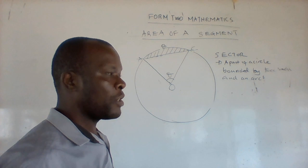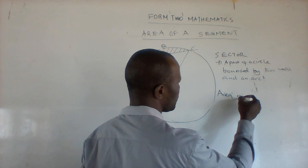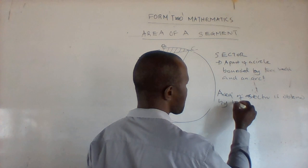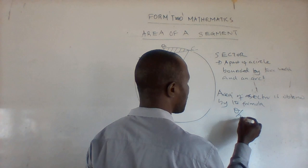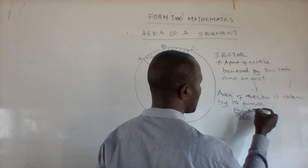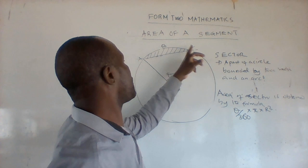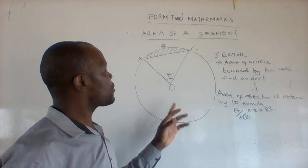The area of a sector is obtained by the formula: theta over 360, times pi, times r squared. That formula will give us the area of sector OABCO.